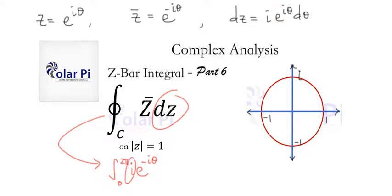And then, we still need to write e to the i theta d theta. How convenient, because by exponent rules, these two say e to the 0, which is 1.